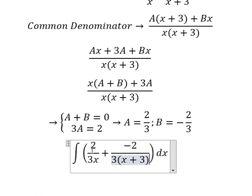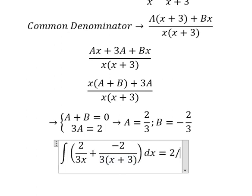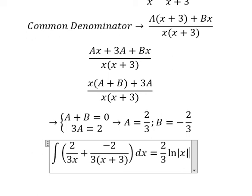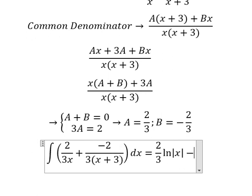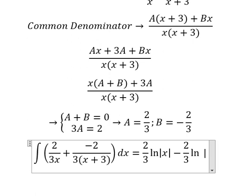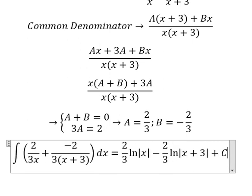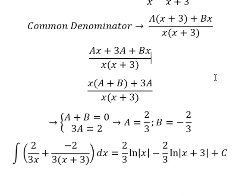The integral of 2 over 3x gives 2 over 3 ln of the absolute value of x. The integral of the second term gives negative 2 over 3 ln of the absolute value of x plus 3, plus a constant. This is the end, thank you for watching.